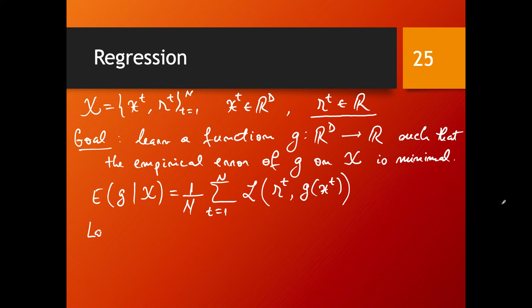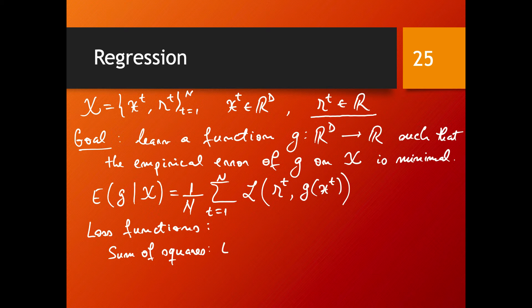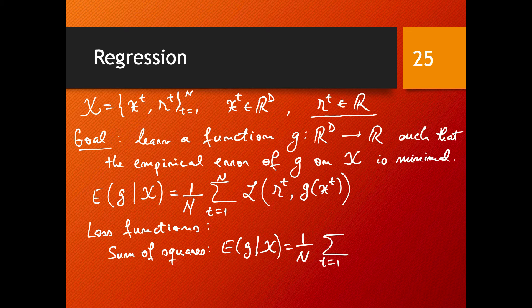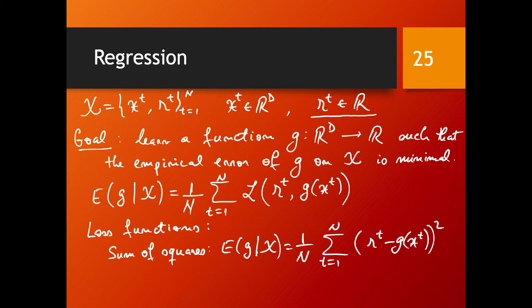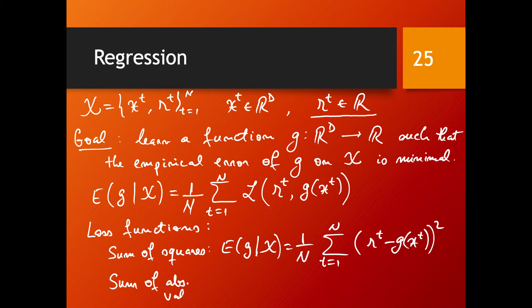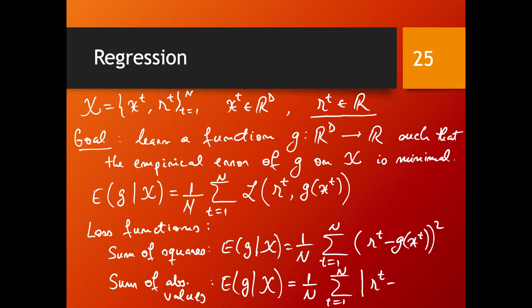Choosing the loss function can be done in a number of ways. Two of the most popular ones are the sum of squares. In this case, the empirical error is 1 over n sum from 1 to n, and here you take the difference Rt and you take that squared.